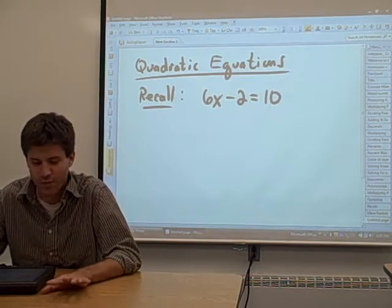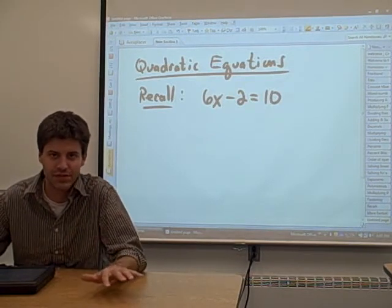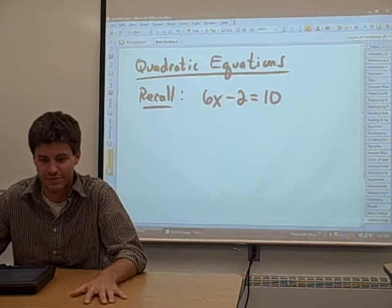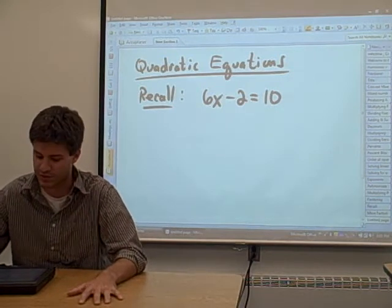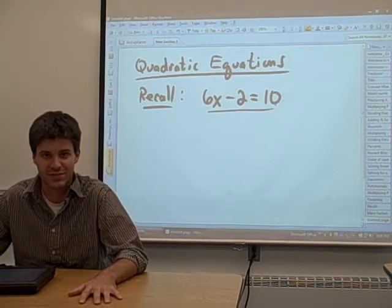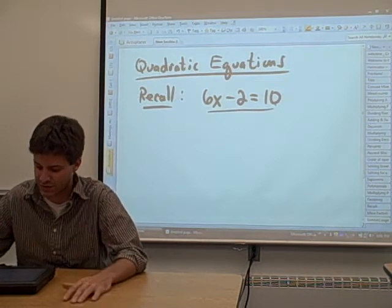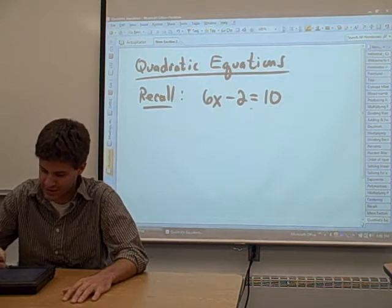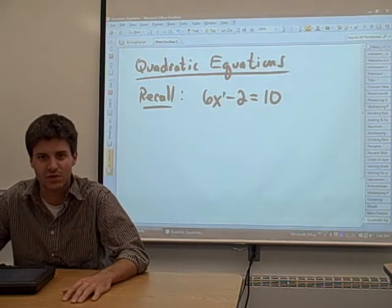Now, first, I want to go back several videos and remind you of these linear equations that we solved earlier. These linear equations, 6x minus 2 equals 10 in this example, are called linear because every power on x is a 1.